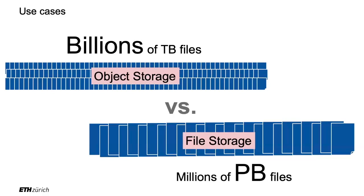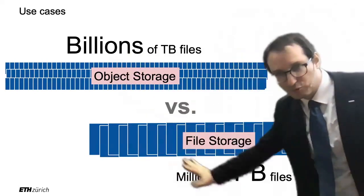What I mean by a huge amount of large files is billions of terabyte files — think of a Netflix series as a worldwide service stored on S3. That's called object storage. Versus what we are looking at today, which is more like millions of petabyte files. The files can be much, much larger, but there are fewer of them. This file storage is not a worldwide system like S3 — it's something you put on your own cluster. Amazon can create it for you, but it's still yours. So what's on top is what we did last week — Amazon S3 or Azure Blob Storage. What we look at today is file storage: millions of petabyte files.